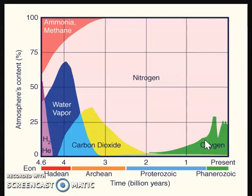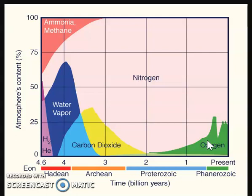UV light can damage DNA, cause cancers, and break down biological molecules, ultimately killing life on Earth. Fortunately, sometime in here, the ozone formed up in the stratosphere, which you've also learned about. That was a key development in the whole process of the development of the atmosphere.